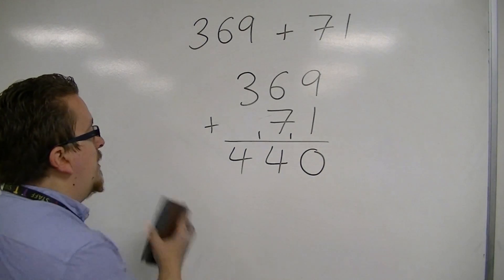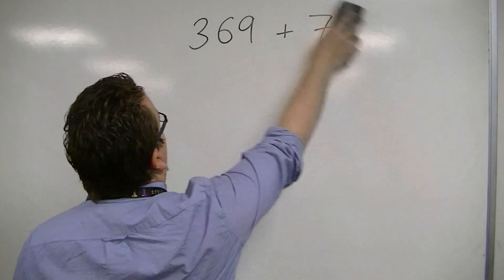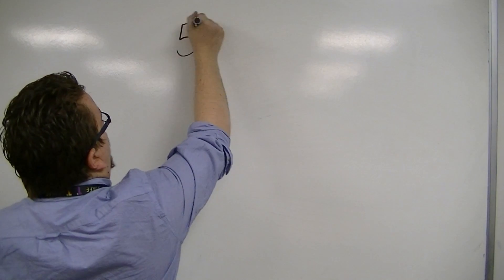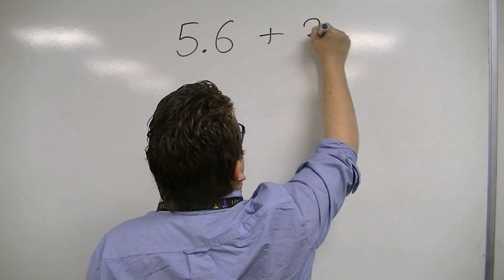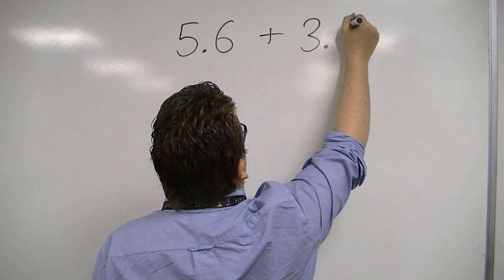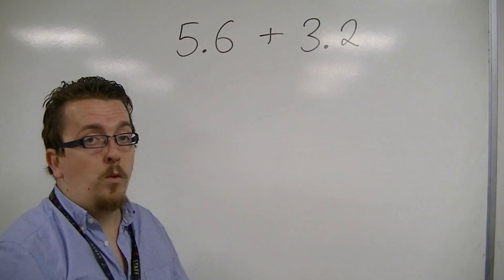Now let's look at an example with decimals. So if you had something like 5.6 plus 3.2, for example, just a nice basic one,